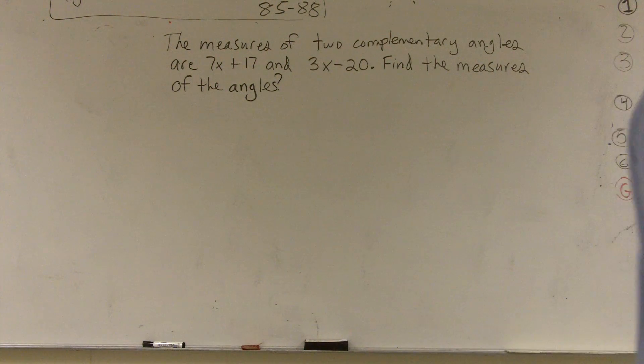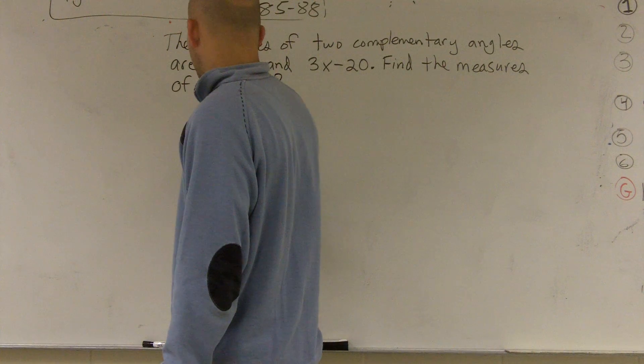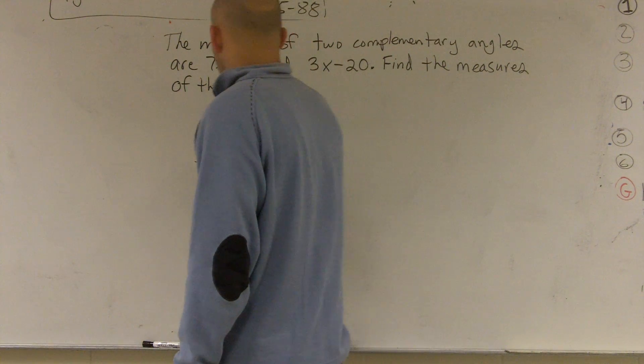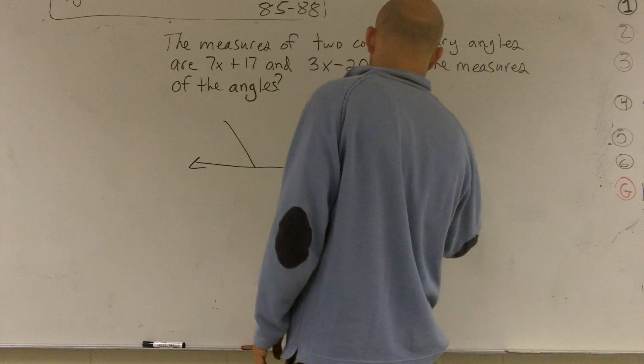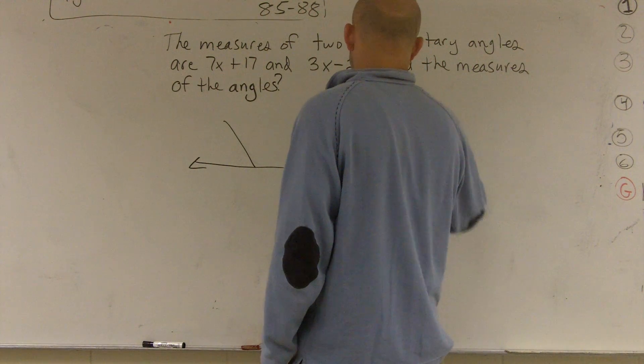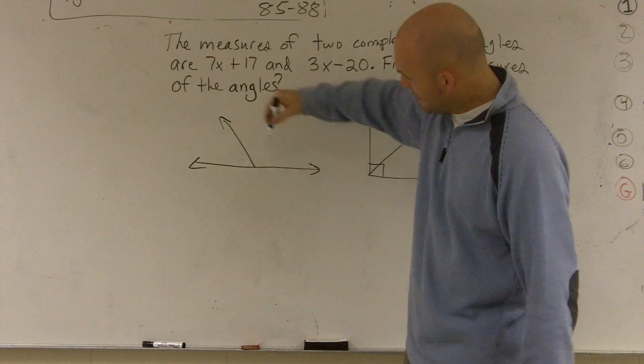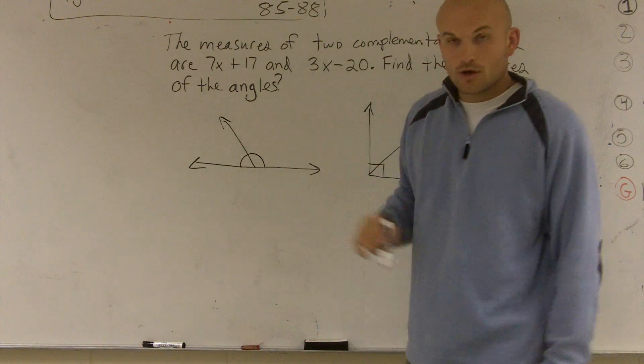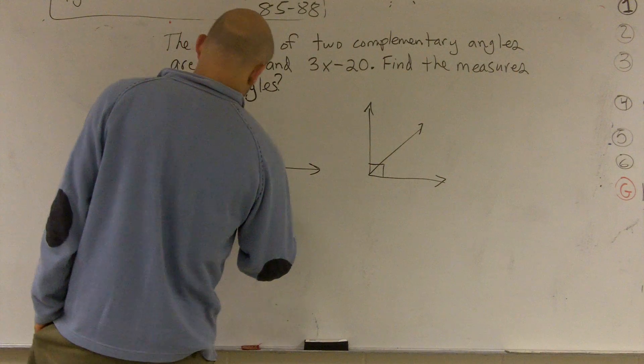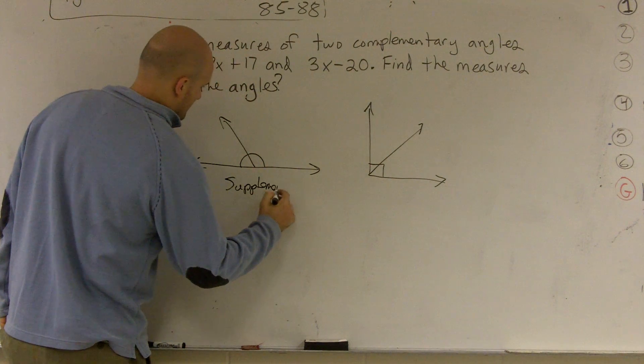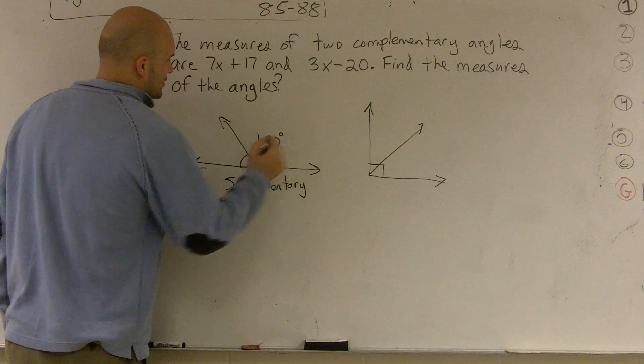So what we need to do is we need to remember what complementary and supplementary angles are. Well, let's take a look here. When you have two angles that make up 180 degrees, or what we call a straight angle, these are what we call supplementary. They make up 180 degrees.